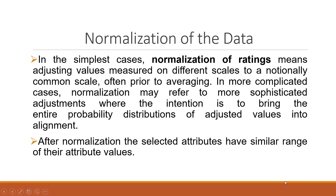In the simplest cases, normalization means adjusting values measured on different scales to a notionally common scale, often prior to averaging. In more complicated cases, normalization may refer to more sophisticated adjustments where the intention is to bring the entire probability distribution of the adjusted values into alignment. It may be possible that in your dataset there are extreme fluctuations in the data, also known as outliers. By normalizing, these outliers will get stabilized.